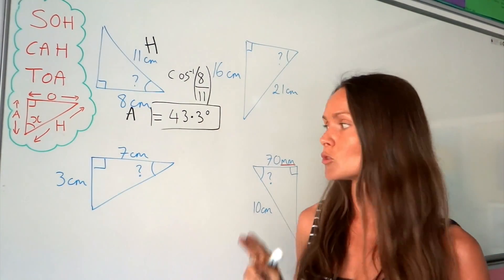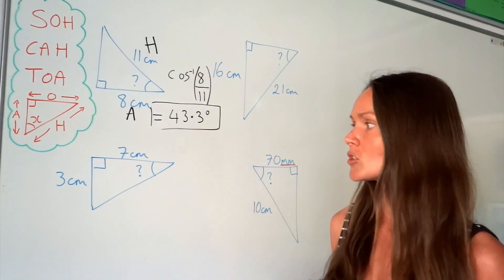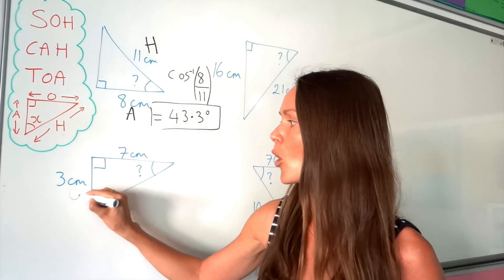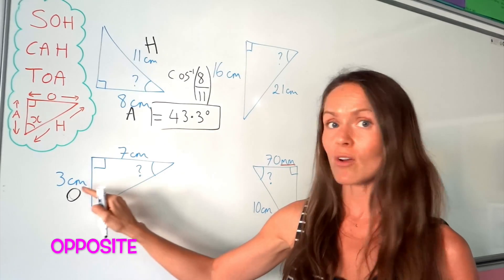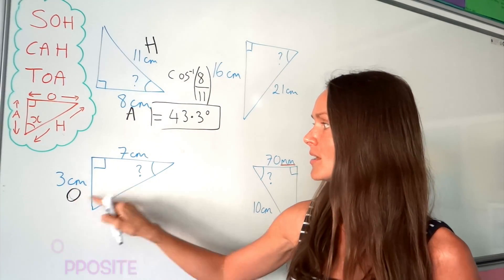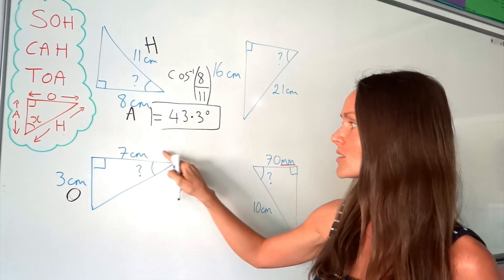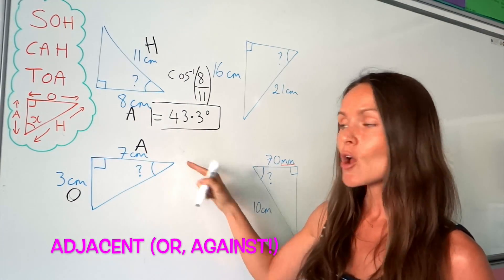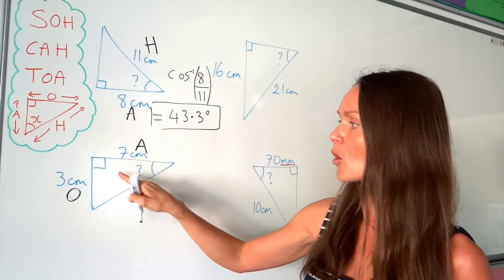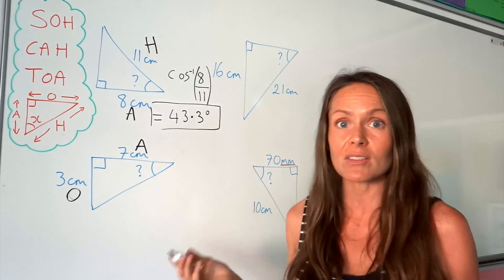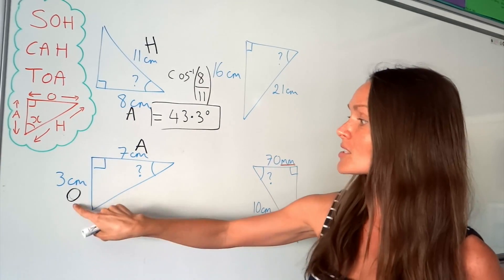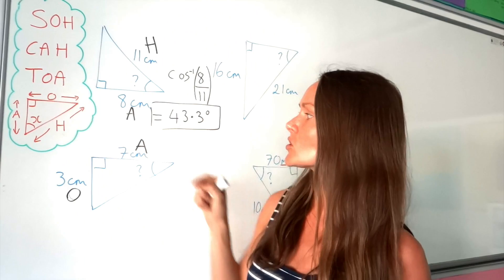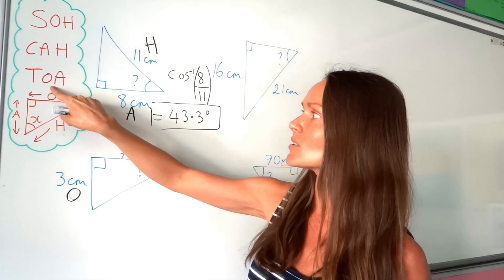For the next one, label the two sides given in the question. This side is opposite the angle we're trying to find, so that's the opposite. The other side is against the angle we're trying to find, so that's adjacent. I don't need to label the hypotenuse because I don't know that length. Using opposite and adjacent, the matching function in SOHCAHTOA is tan.